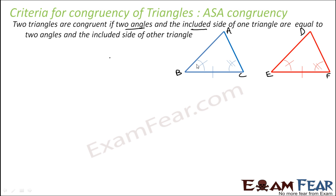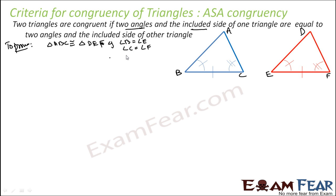We have to prove that if angle B is equal to angle E, angle C is equal to angle F, and BC is equal to EF — that is, angle-side-angle, where the corresponding pairs are equal — then the triangles are congruent. This needs to be proved, so it will be a theorem.